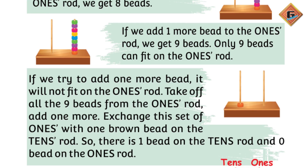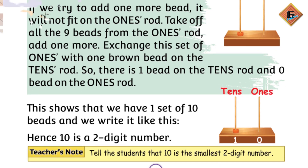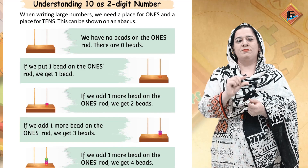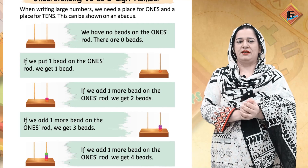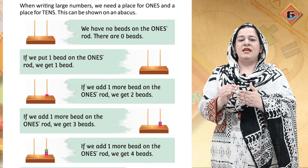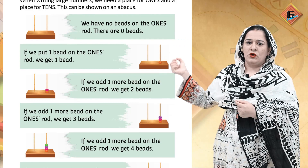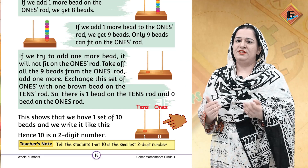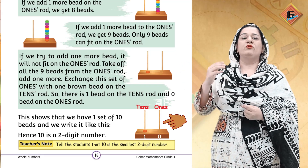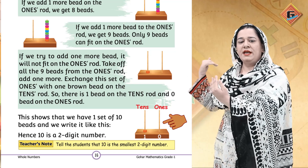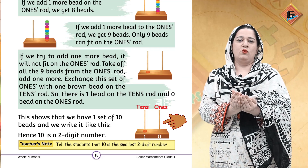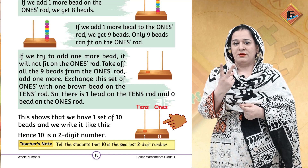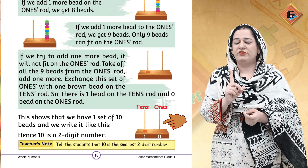Ab hamne in sab ko nikala aur ek aur add kiya — ab ye kitne ho gaye? Nine ke baad — ten! Very good. Ab jab hum abacus pe iski representation karenge, to un sab ki jagah ek bead alag color ka lete hain taake humein asaani rahe. Aap is ek bead ko doosri jo aapki left side pe rod hai usme daal denge. Ab humari ones ki side pe kya ho gaya? Zero. Aur doosri rod mein ek bead hai.